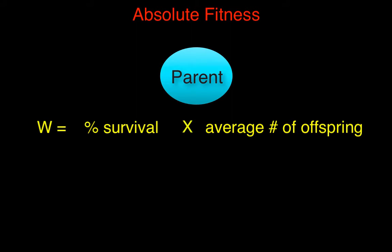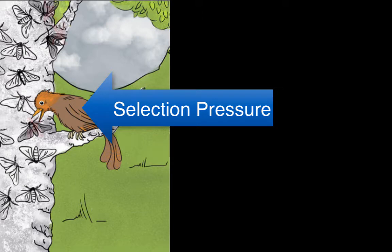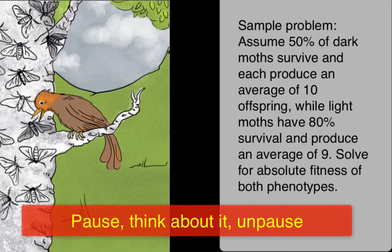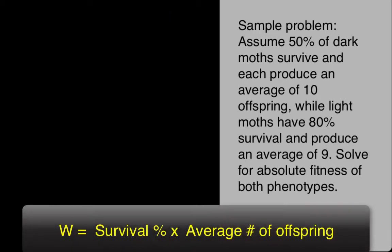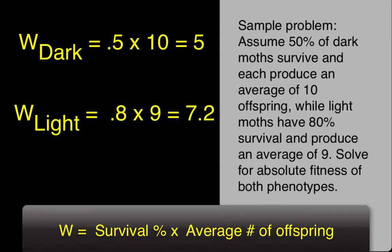Absolute fitness is just a product of those two numbers — survival rate times reproduction rate. In this example of our moths, we have light and dark colored moths on a light colored tree. The selection pressure is a predator that will most likely see the dark moths, while the light moths blend in with the tree. The dark moths have a 50% survival rate and produce an average of 10 offspring per moth, giving an absolute fitness of 0.5 × 10 = 5. The light colored moths survive at 80% and produce about 9 offspring, giving a fitness of 0.8 × 9 = 7.2. So the light colored moths have a higher fitness.